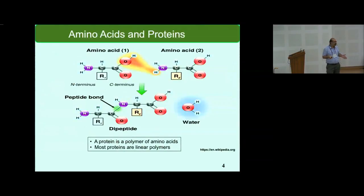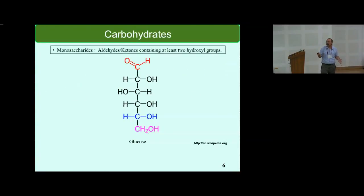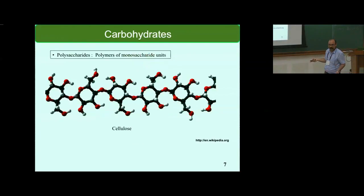Now I'll go to some biological molecules like proteins. Proteins are basically polymers of amino acids. Then you have lipids which are a quite diverse group of molecules inside the cell. For example, phosphoglyceride is a lipid which is a chief constituent of cell membranes. Then you have carbohydrates which are basically aldehydes or ketones containing at least two hydroxyl groups. This is a picture of glucose. And you can have polymers of that. Polysaccharides are basically polymers of monosaccharides.